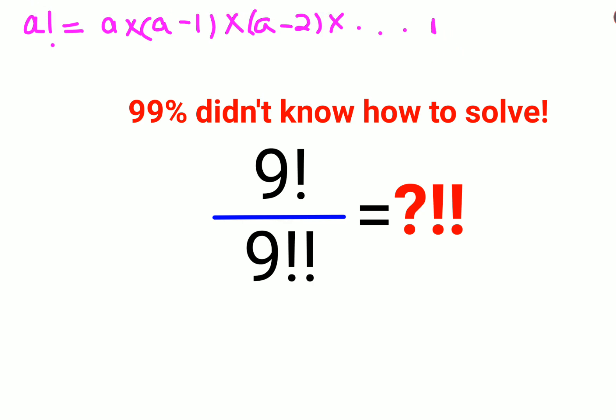I can say that 5 factorial, if I wanted to find that, is 5 into 4 into 3 into 2 into 1. If I want to find 9 factorial, that is 9 into 8 into 7 into 6 into 5 into 4 into 3 into 2 into 1.